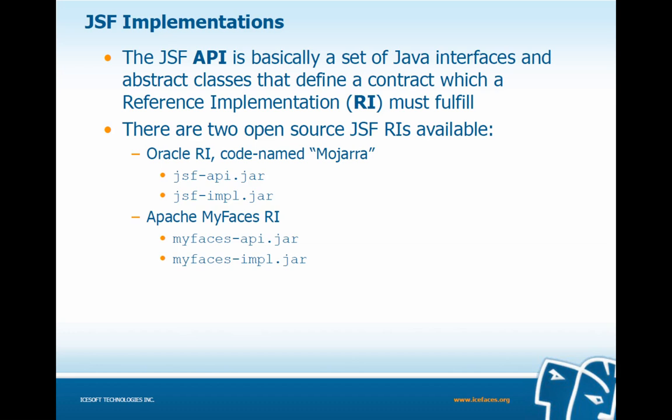In order to use JSF in our application, we need an implementation. The JSF API is a set of interfaces and classes that define a contract which a reference implementation, or RI, must fulfill. We have two open source JSF RI options: the Oracle RI, codename Mojarra, which includes the JSF API and impl jars, or the Apache MyFaces implementation. For this course, we are going to use the Mojarra implementation.